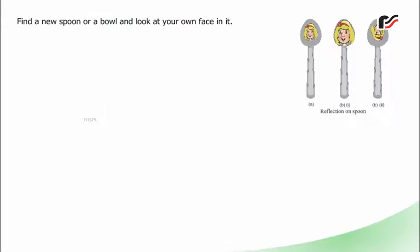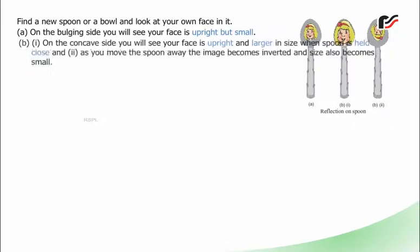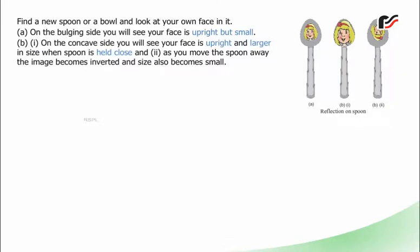Find a new spoon or a bowl and look at your own face in it. On the bulging side, you will see your face is upright but small. On the concave side, you will see your face is upright and larger in size when the spoon is held close.